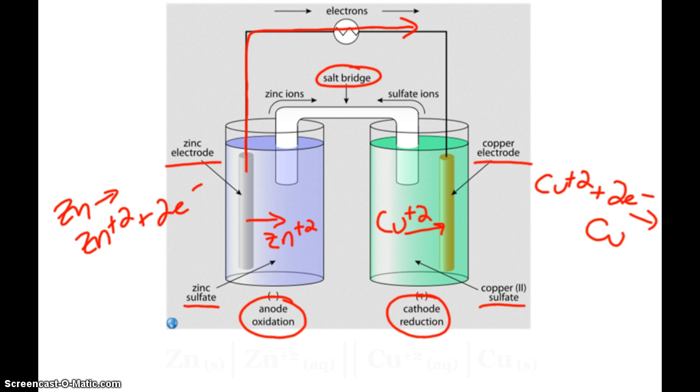Yes, during the running of the cell, the zinc electrode will actually get smaller. And the copper electrode will actually get bigger. And we'll be able to do some stoichiometry with that just to say how much later on.